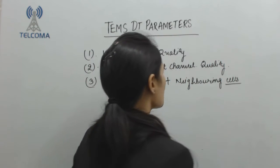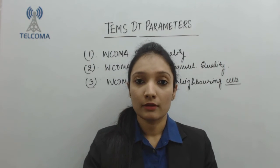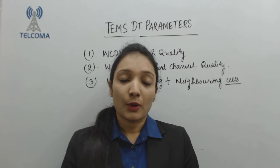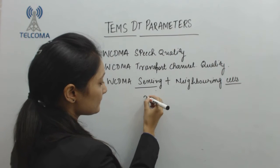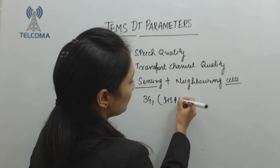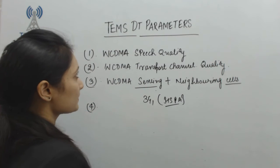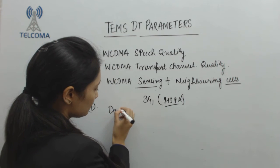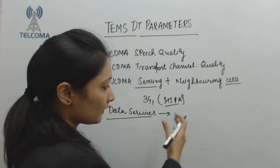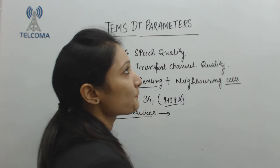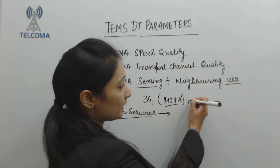We have parameters to check circuit-switched voice quality for the UMTS network. As networks migrated from GSM to 3G for higher data services, the existing 3G system is combined with HSPA — high speed packet access. The next TEMS parameters are for data services, where you can get information about the session, session duration, and check the average throughput for uplink and downlink.